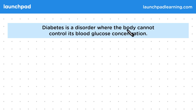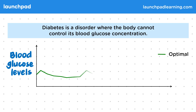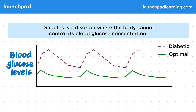Diabetes is a disorder where the body cannot control its blood glucose concentration. On this graph you can see blood glucose levels on the y-axis. The green line shows the optimal blood glucose levels over time, and this red dashed line shows the blood glucose levels of somebody who is diabetic. We can see that blood glucose levels are consistently higher in a person with diabetes.